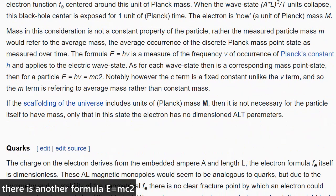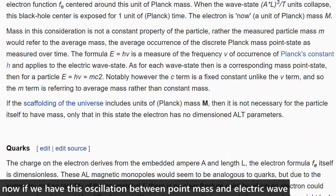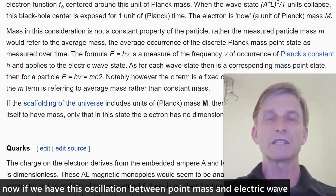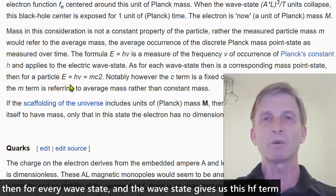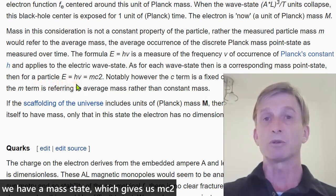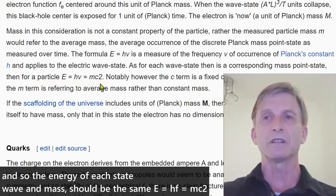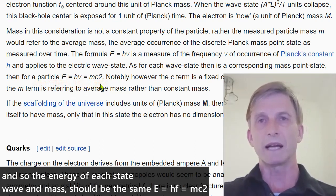There's another formula, E equals MC squared. Now, if we have this oscillation between point mass and electric wave, then for every wave state, and the wave state gives us this HF term, we have a mass state, which gives us M equals C squared, MC squared. And so the energy of each state, wave and mass, should be the same.